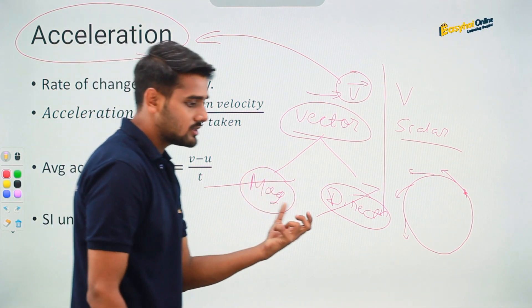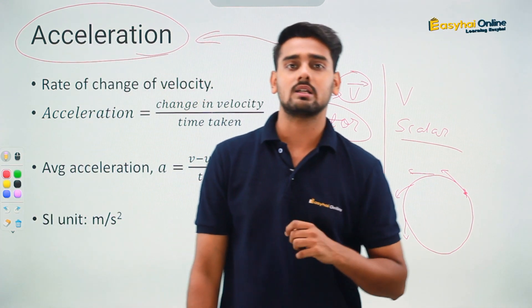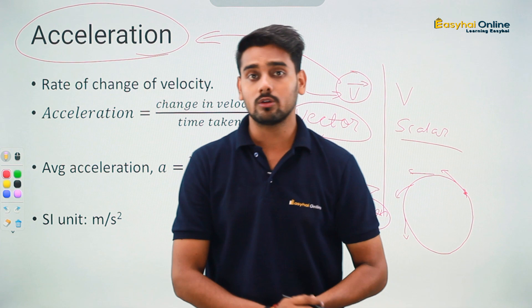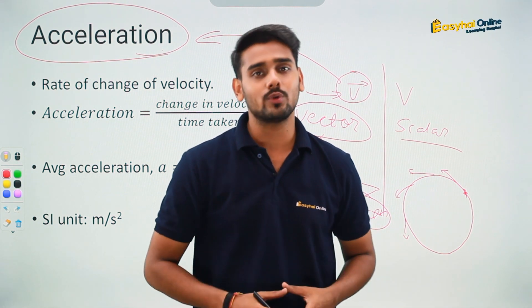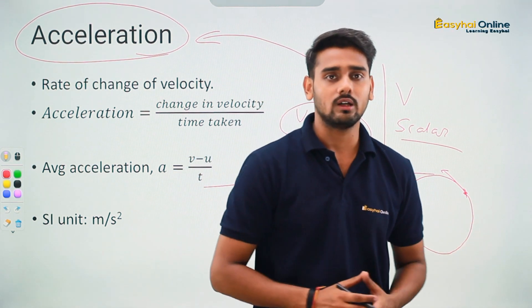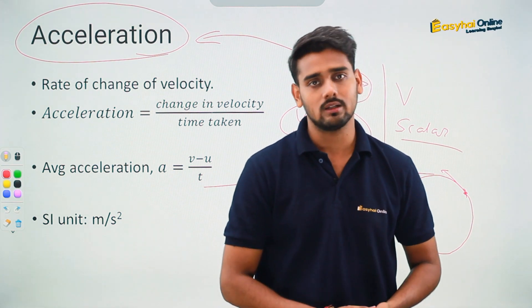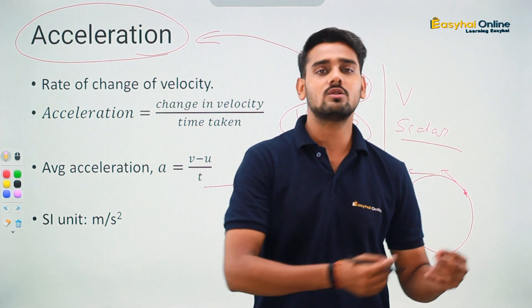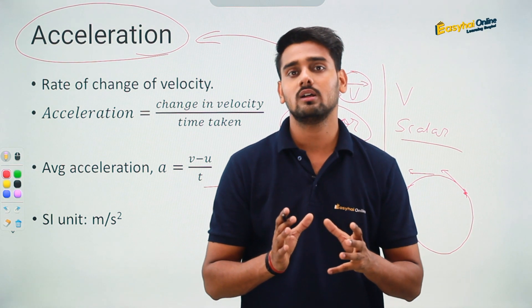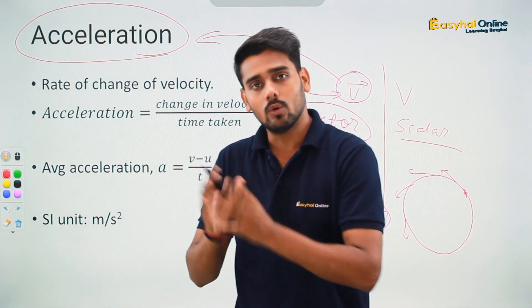If the velocity is constant, there is going to be zero acceleration. Just like we understood that when there is no change in position, in that case there is no velocity. The velocity is zero in that case. Here as well, when there is no change in velocity, there will be no acceleration.